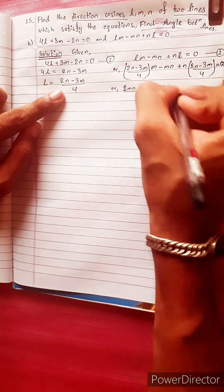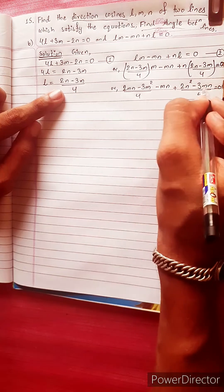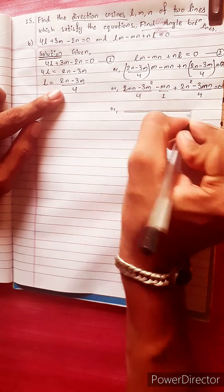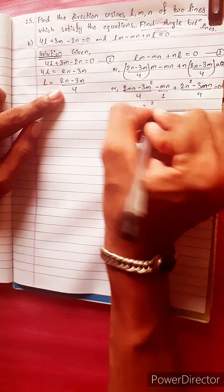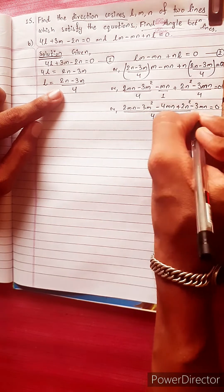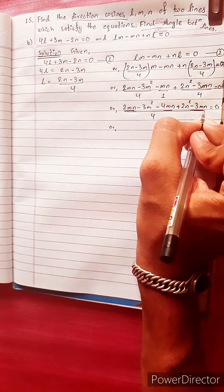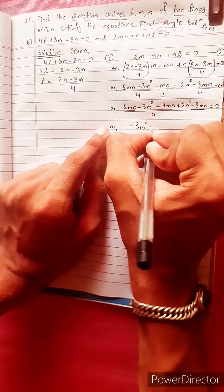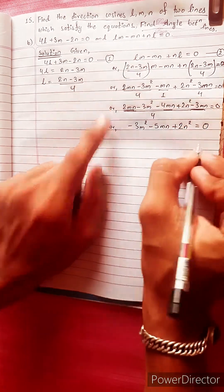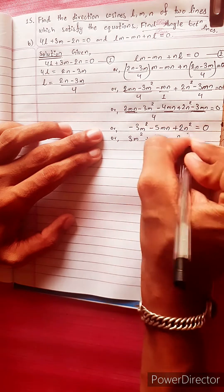Substituting L equals to 2N minus 3M divided by 4 into equation 2, and simplifying, we get 3M squared plus 5MN minus 2N squared equals to 0.